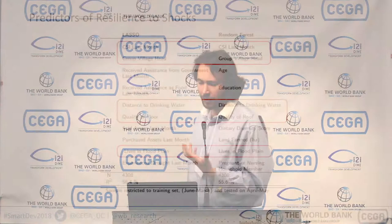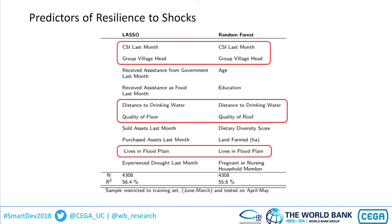Finally, what this method also allows us to do is, in a context where you're collecting high-frequency data — where you have a very short amount of time to collect data from the household, benchmarked here at about ten minutes — find out what the best predictors of food insecurity are.